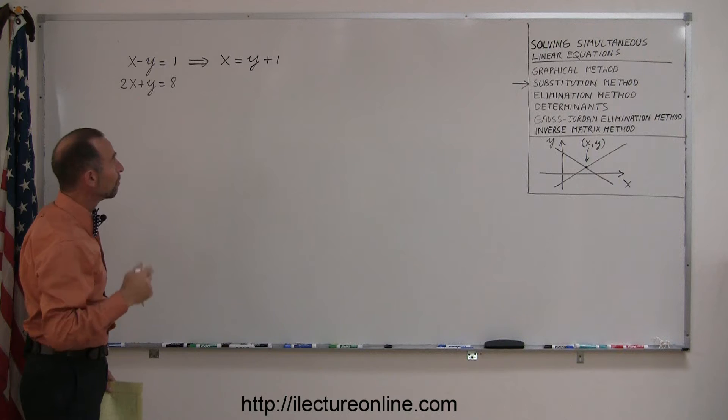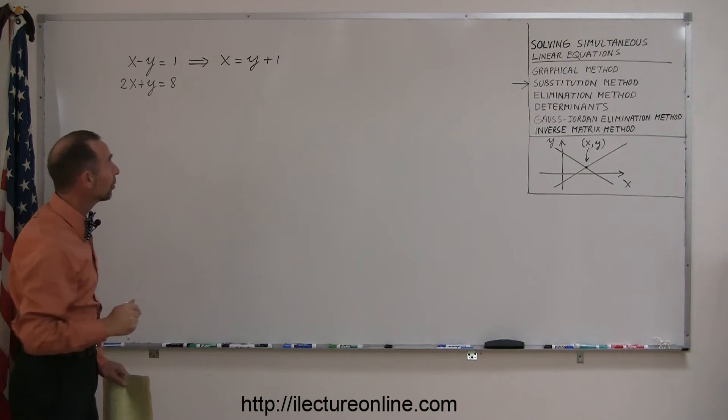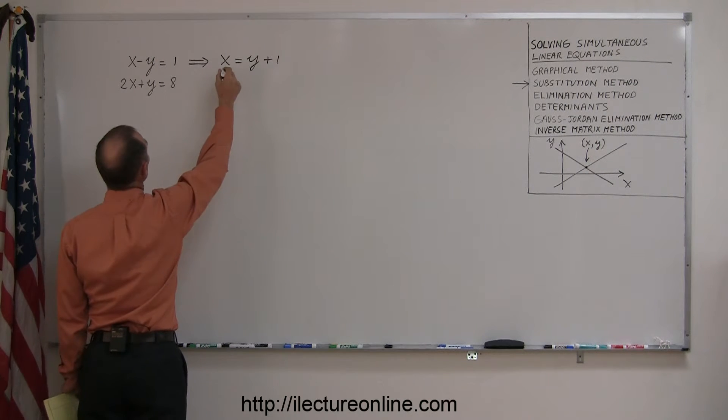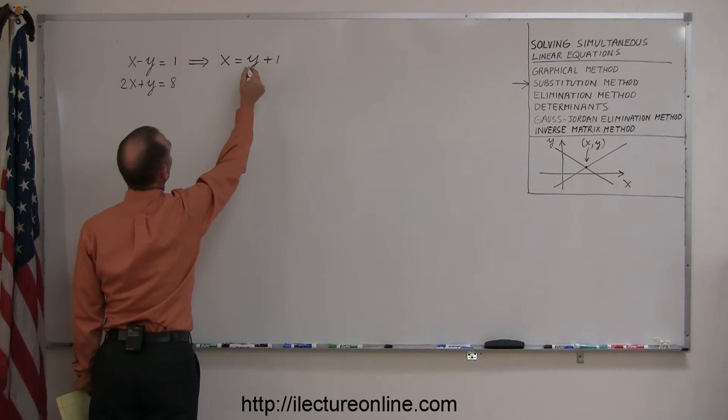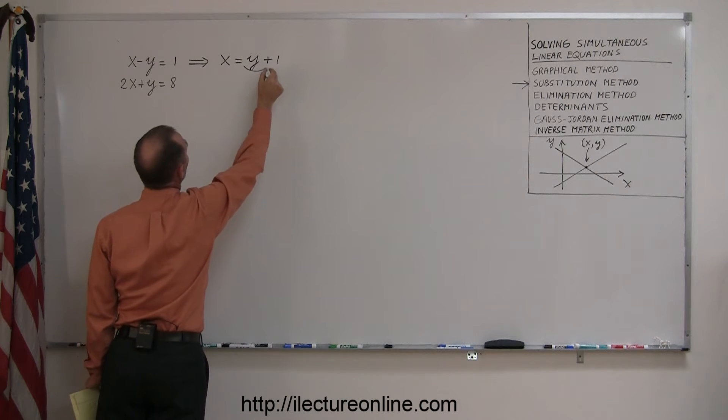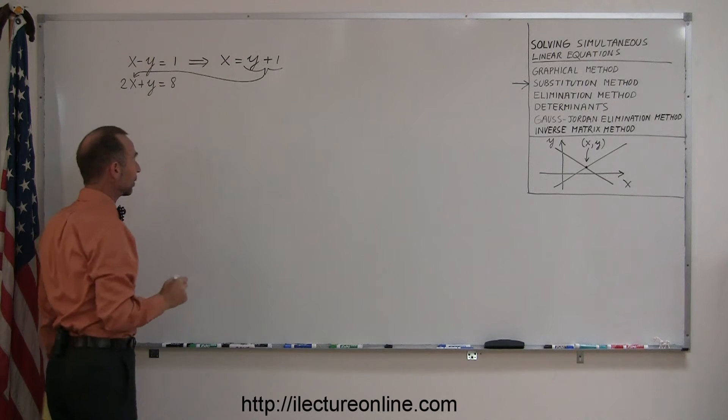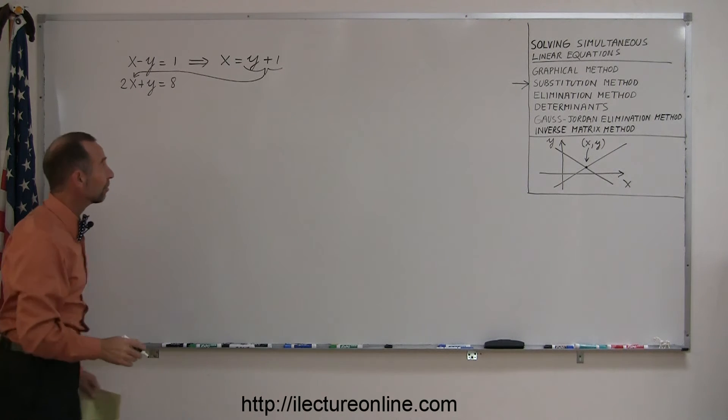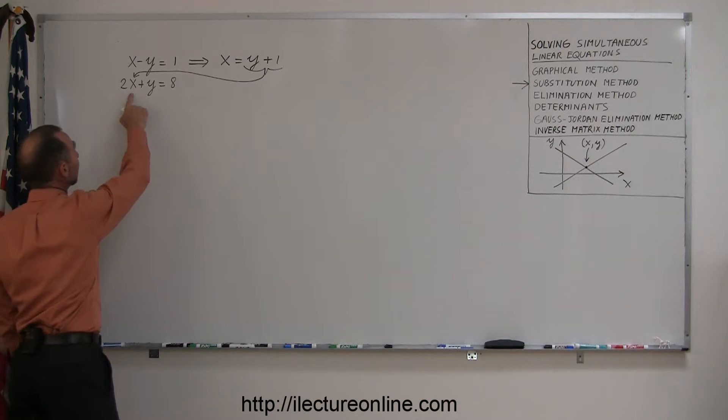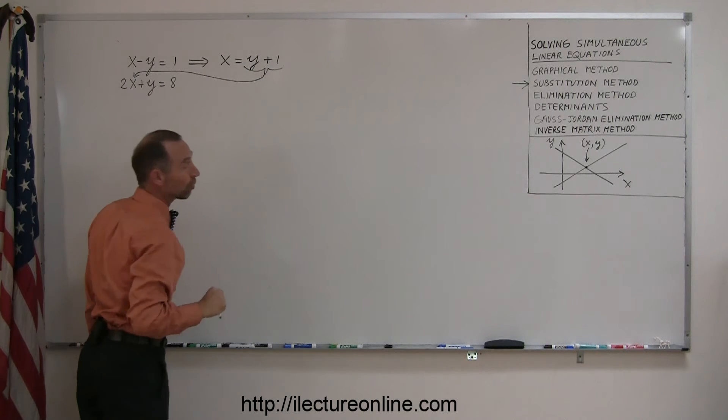And then the second part of this methodology of solving this type of equation is that you then substitute for x what x is equal to, which in this case is the y plus 1, that then gets substituted back into the second equation. So for every x that you find in the second equation, you replace that x by what x is equal to in terms of y.